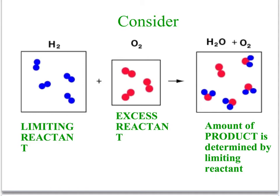The hydrogen is the limiting reactant, the oxygen is the excess reactant, and there is some of the excess reactant left at the end of the reaction. The amount of product is determined by the limiting reactant because it limits how much product we can produce.